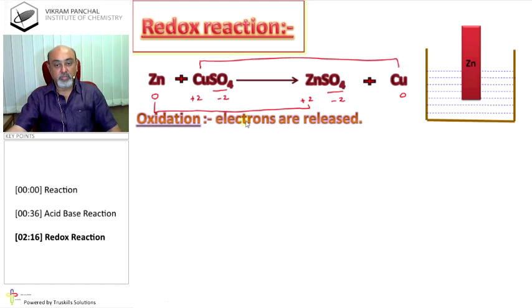Oxidation means electrons are released. So, here zinc is oxidized and therefore, we will get Zn to Zn+2 plus 2 electrons. During oxidation, oxidation number of element increases. So, 0 to plus 2 is oxidation.